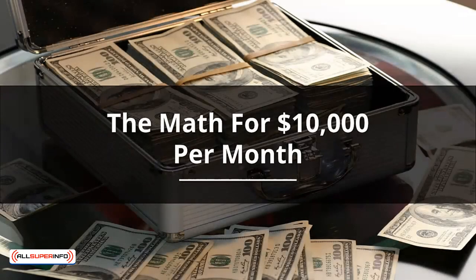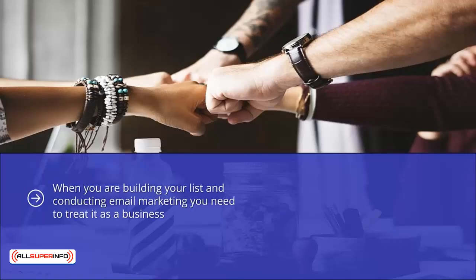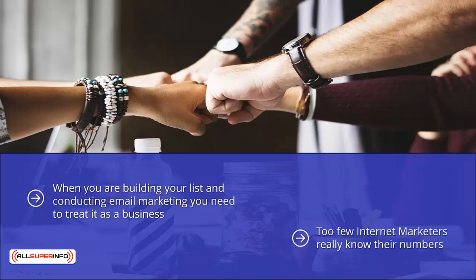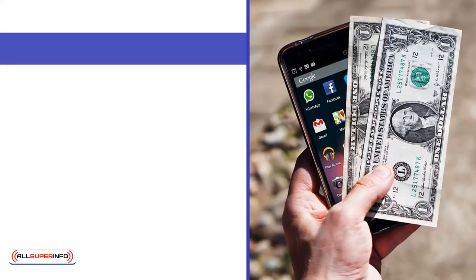The math for ten thousand dollars per month: when you are building your list and conducting email marketing, you need to treat it as a business. This means you need to know the numbers or metrics that are important. You need to look at opt-in conversions and the value per subscriber at a minimum. Too few internet marketers really know their numbers — they try many different approaches and do not measure how well they performed. You must take the time to do this; it is just simple math.